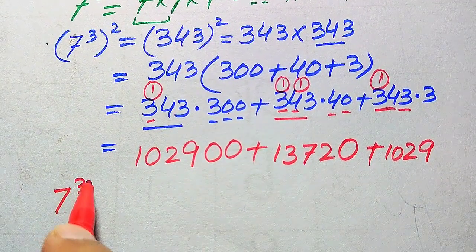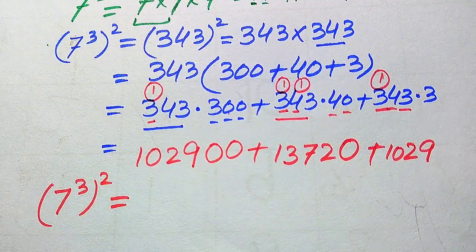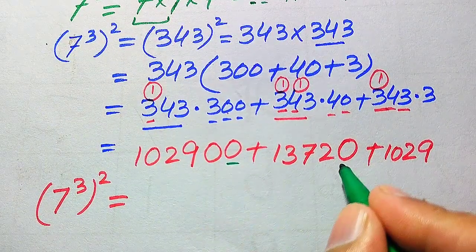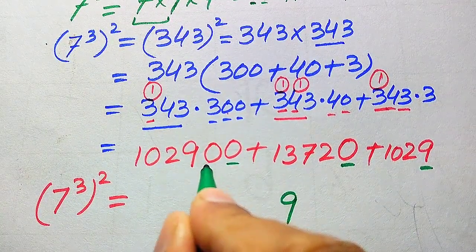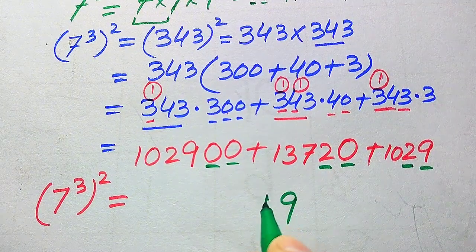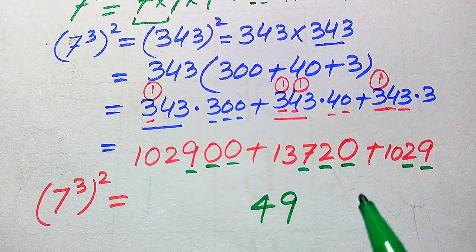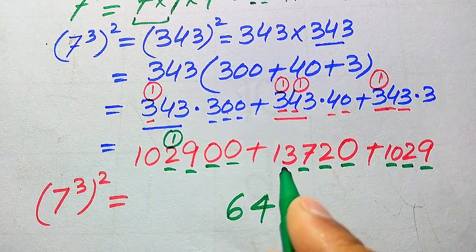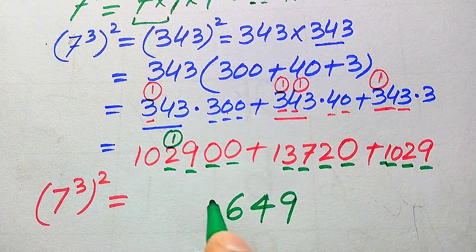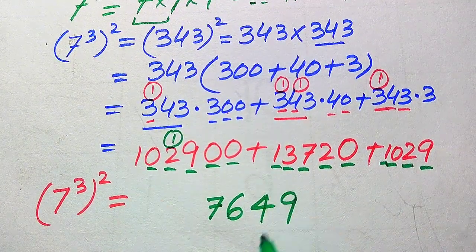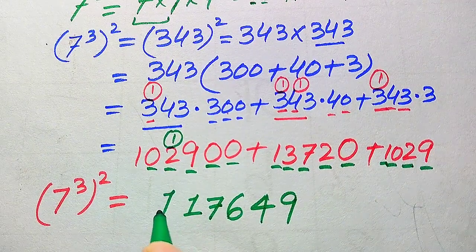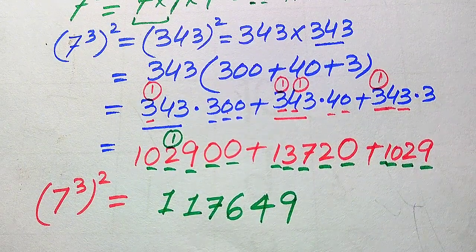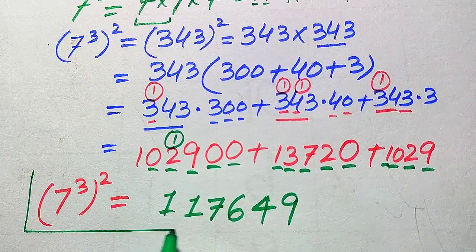In the final step we sum up all these values to get the square of 7 cubed. Adding the columns: 0 plus 0 plus 9 is 9; 0 plus 2 plus 2 is 4; 9 plus 7 is 16, plus 0 is 16, write 6 carry 1; 2 plus 3 is 5, plus 1 is 6, plus 1 is 7; 0 plus 1 is 1; and finally 1. So 7 cubed whole square equals 117649.